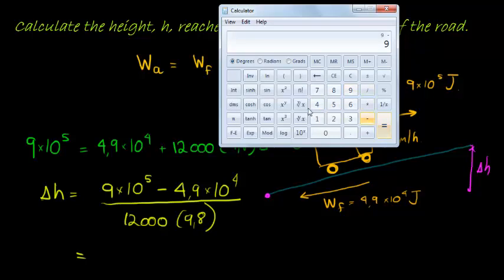That's 9×10⁵—900,000 Joules—minus 4.9×10⁴, which is 49,000. That gives me 851,000 Joules divided...